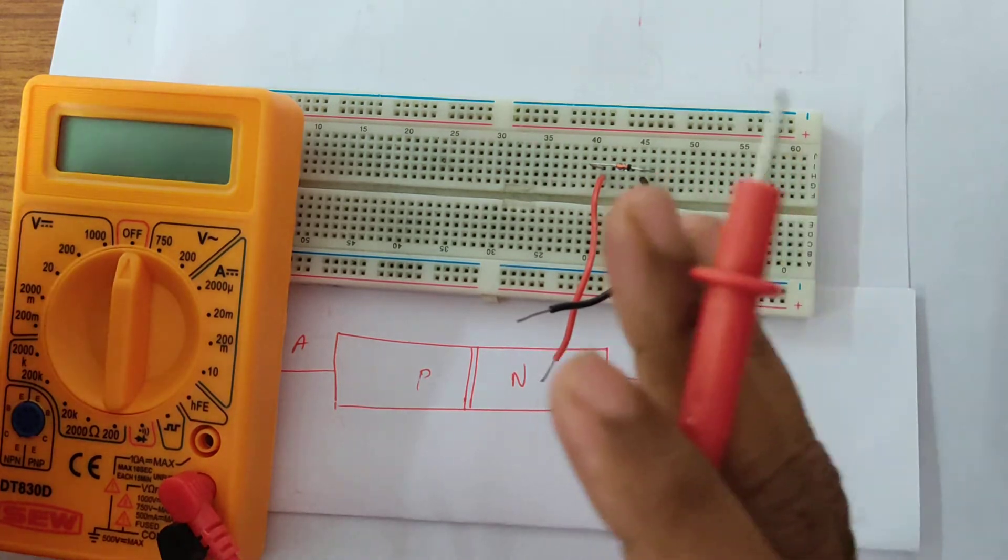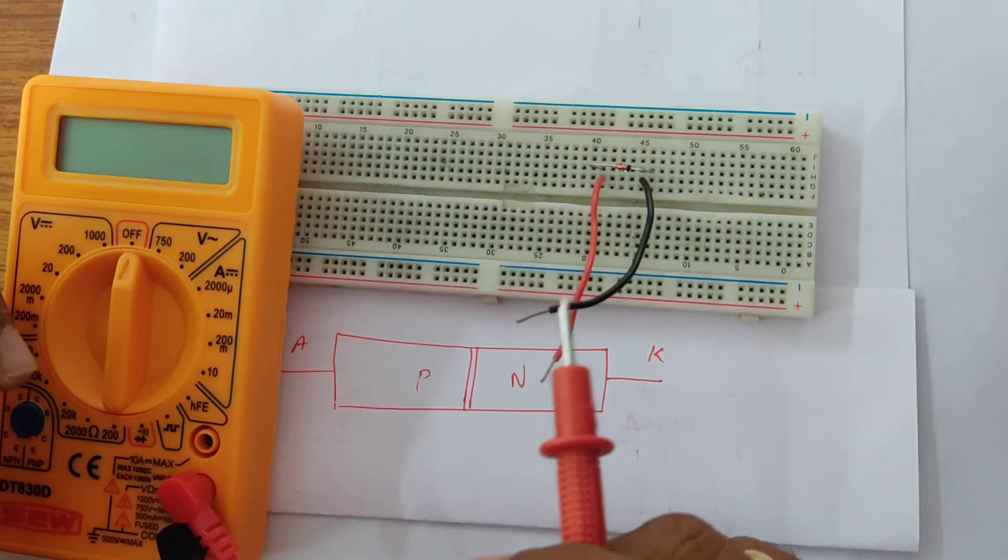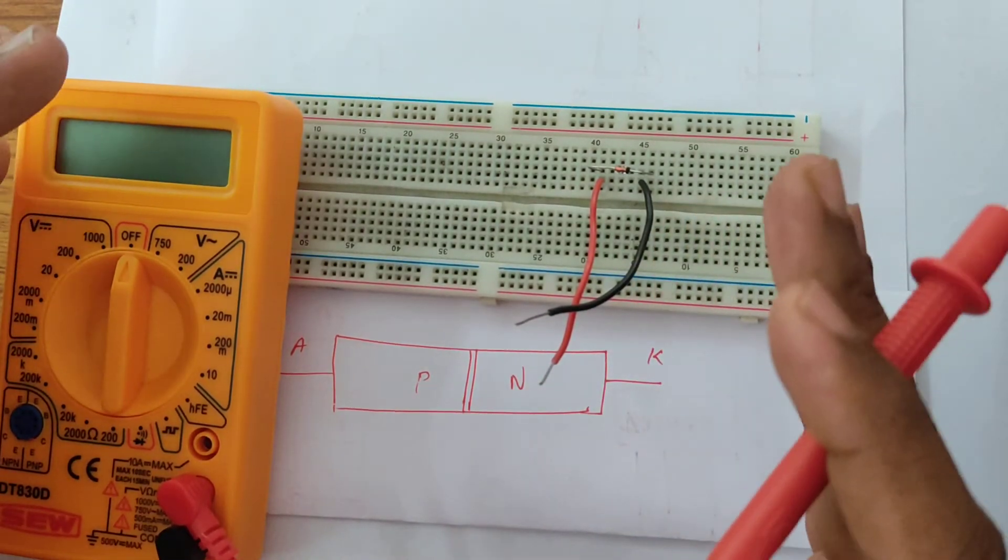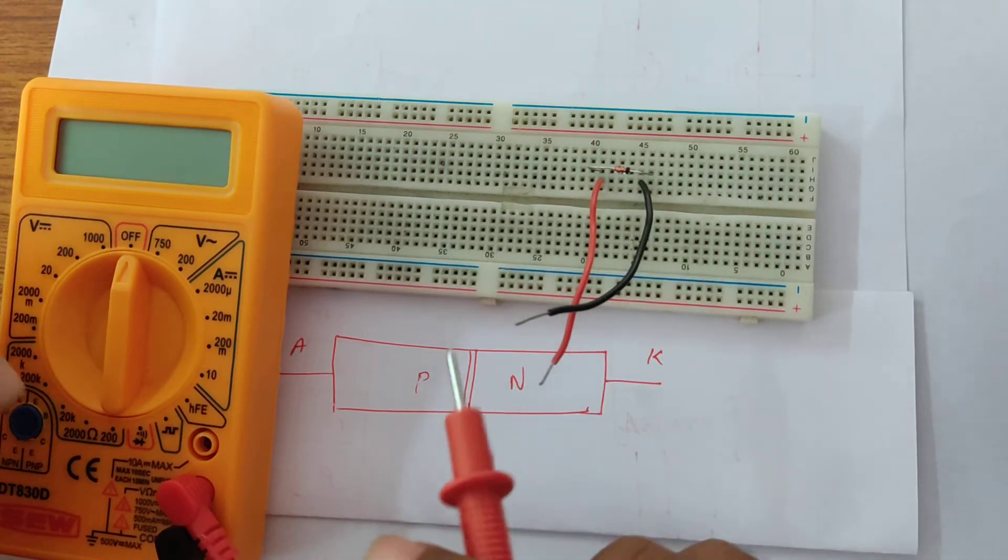But for measuring purposes, since we have not applied any additional polarity, we can't get the resistance in the reverse. So it would be the same, you'll be getting the same output like you did for your PN junction diode which was shown in the earlier video.